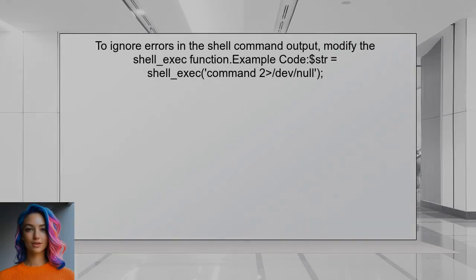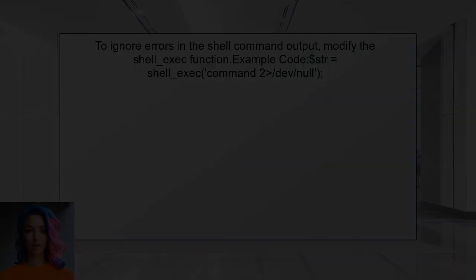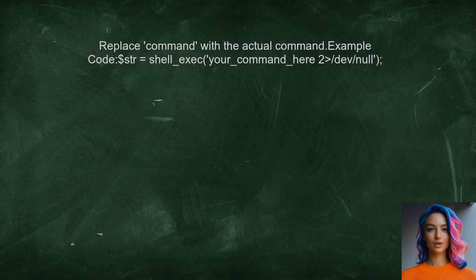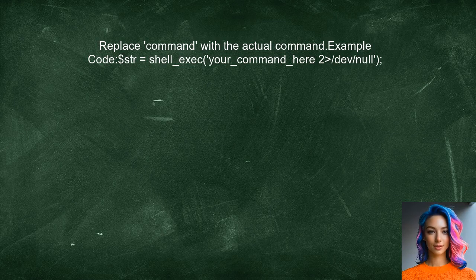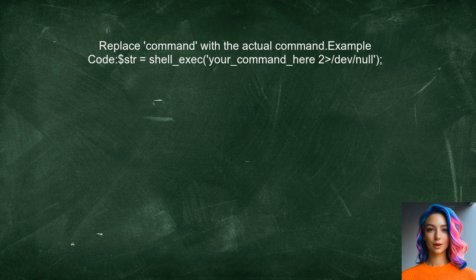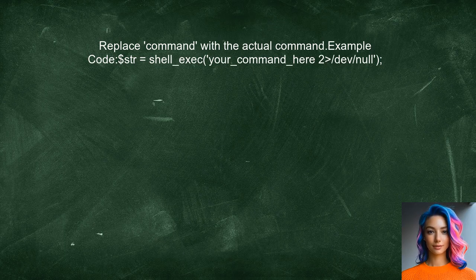To ignore errors in the shell command output, the user can modify the shell_exec function. This can be done by redirecting the error output to a null device. In this example, the user should replace command with the actual command they want to execute. The 2>/dev/null part tells the shell to send any error messages to a null device, effectively ignoring them.